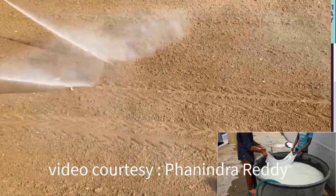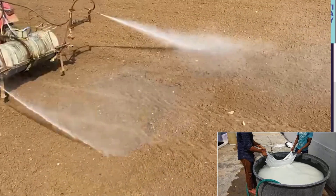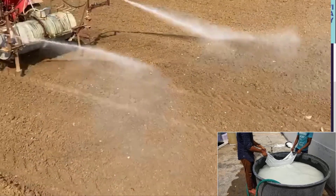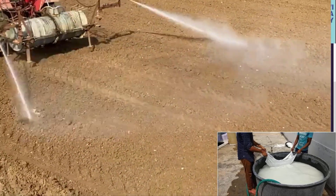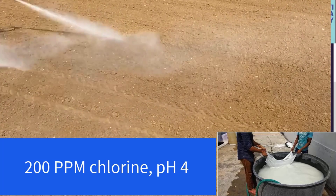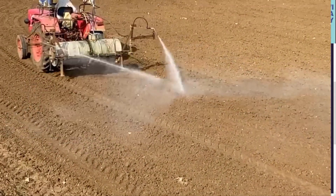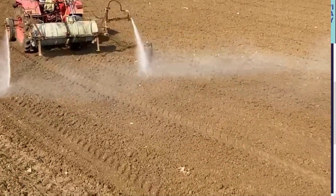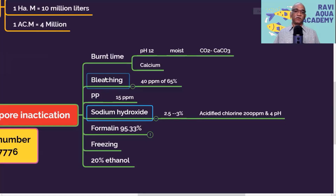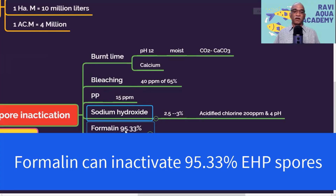After the sodium hydroxide treatment, apply acidified chlorine at 200 ppm with the solution pH around 4 to completely inactivate EHP spores. All three — bleaching powder, potassium permanganate, and sodium hydroxide — are able to completely inactivate EHP spores in the laboratory. However, formalin is effective only at 95.33%, not 100%, even at a concentration of 200 ppm, which is also very difficult to apply in the pond.